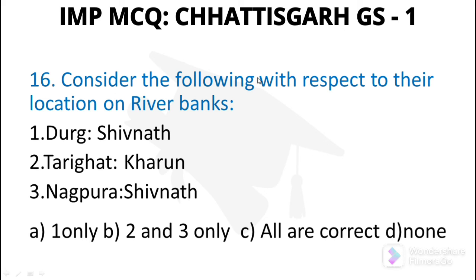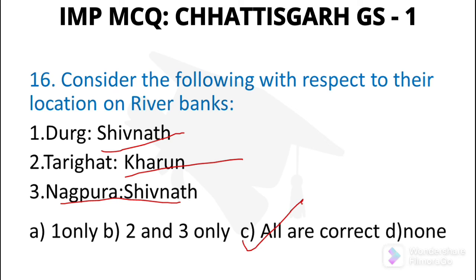Question number 16: Consider the following with respect to their location on rivers. Durg is on Shivnath Nadi. Dari Ghaat is on Shivnath Nadi. Nagpur is also on Shivnath Nadi. All are correct — option C.